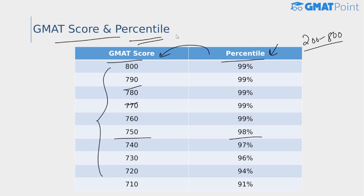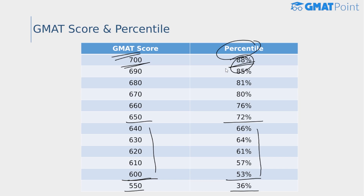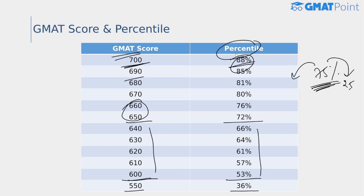For reference, a score of 800 is at the 99th percentile. A score of 750 is at the 98th percentile, 700 is at the 88th percentile, 650 is at the 72nd percentile, 600 is at the 53rd percentile, and 550 is at the 36th percentile. A 75th percentile means 25% of test takers performed better than you and 75% did not do as well. Also note that your GMAT score will not change, but percentile numbers might vary as they are recalculated depending on the number of test takers in a given period.